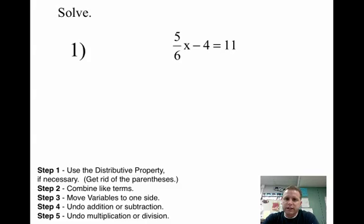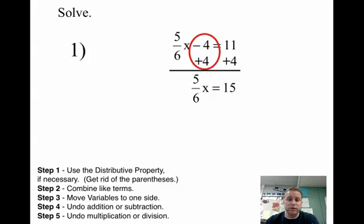Alright, so let's take a look at problem number one. We have 5/6x minus 4 equals 11. So go through your steps here, and we don't have any parentheses, so there's no distributive property. There's no like terms. The terms that we have on the left side are 5/6x, and the second term is negative 4. So we don't need to do step three. Now we are going to take care of step four, addition and subtraction. They're subtracting four, so we're going to add four to both sides. Remember, keeping our equation balanced. The fours will zero out, and that will give us 5/6x equals 15.